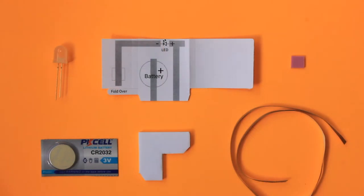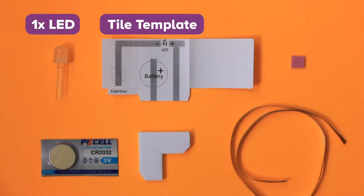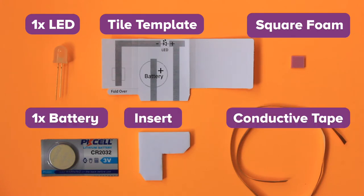First let's take a look at what's in our kit. One LED, a tile template, square foam, one battery, an insert, and conductive tape.